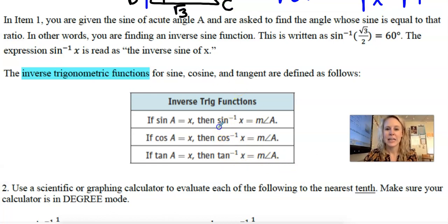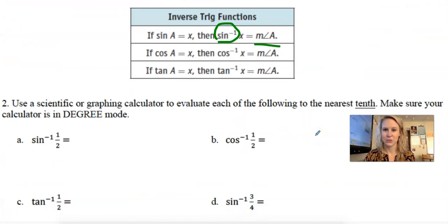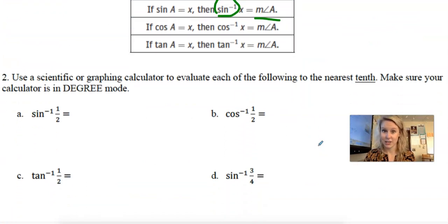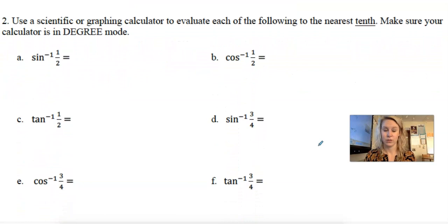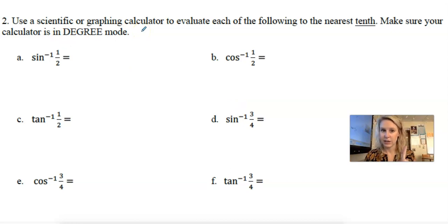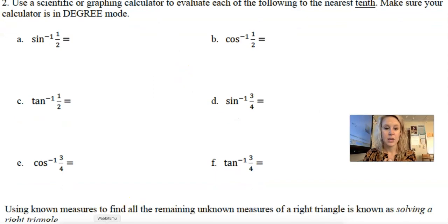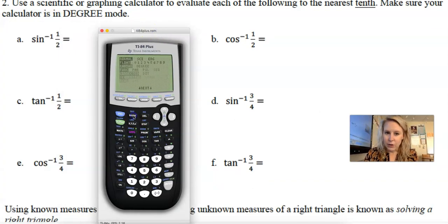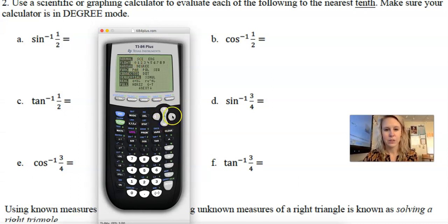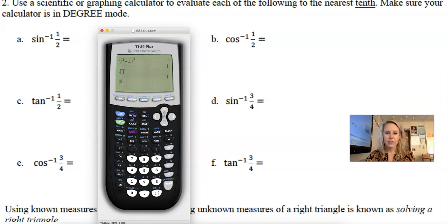That sounds confusing but it's actually pretty cool because your calculator does all the work. I'm going to use a scientific or graphing calculator, evaluate to the nearest tenth — one decimal place — and make sure the calculator is in degree mode. To set degree mode: go to Mode, go down, go right, hit Enter — it's in degree. Quit out of that, and then we just type this in the calculator.